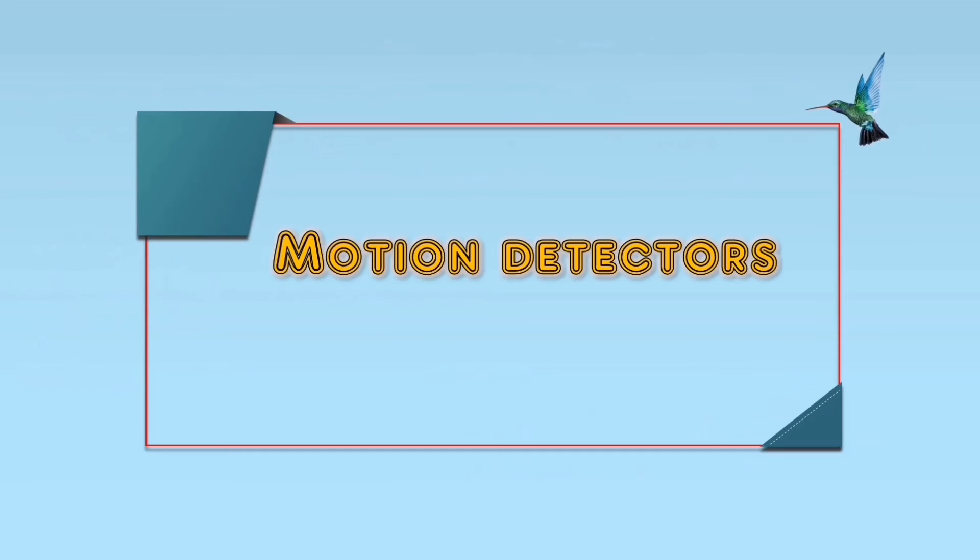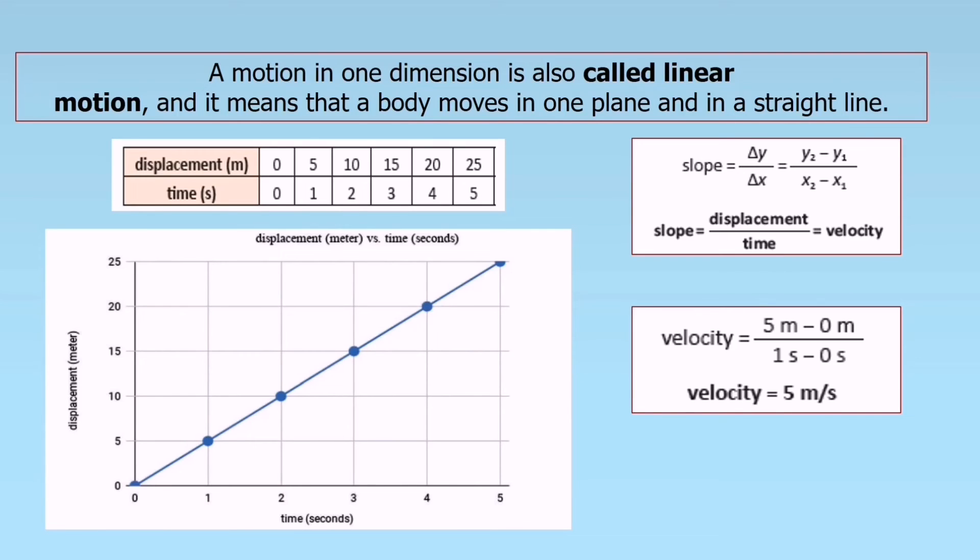Next is motion detectors. How we are going to detect the motion. In one dimension, we have linear motion. It means that the body moves in one plane and in a straight line. We have the Cartesian plane in a graph. To understand the motion, if it is moving back and forth or not, if in linear motion, we can use this graph. Displacement and time. We are going to plot. This is the y-axis or the time, and this is the displacement.